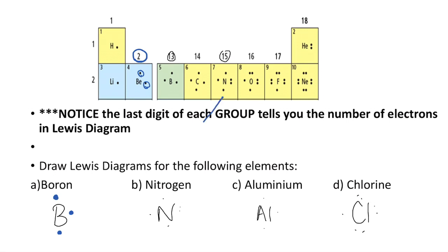For nitrogen, which is in group five, it has five valence electrons. So one, two, three, four, and five.